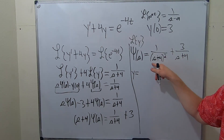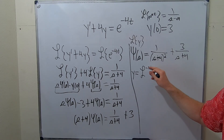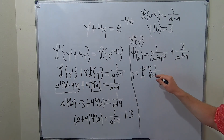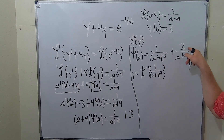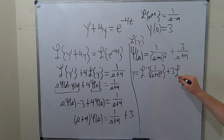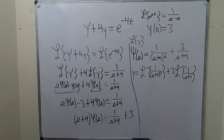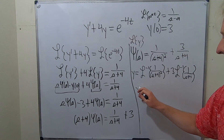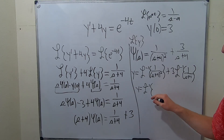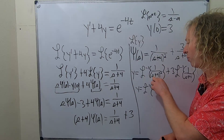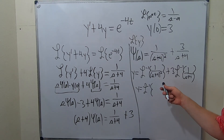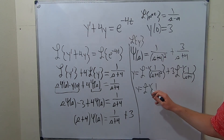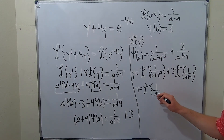So y equals the inverse Laplace of each piece. We take the inverse Laplace of 1 over (s plus 4) squared, plus 3 times the inverse Laplace of 1 over (s plus 4). For the first piece, we apply a shift: we replace s plus 4 with s, using the First Translation Theorem, also called the Shifting Theorem. Whenever you do a shift like this, you get an exponential function.